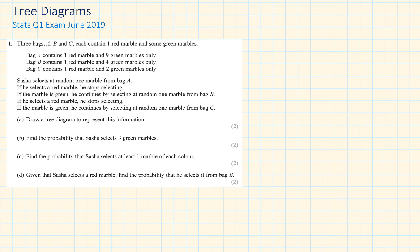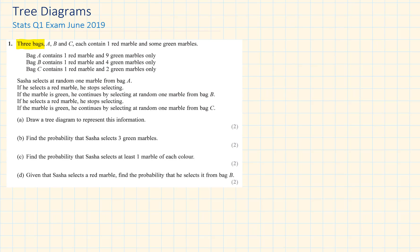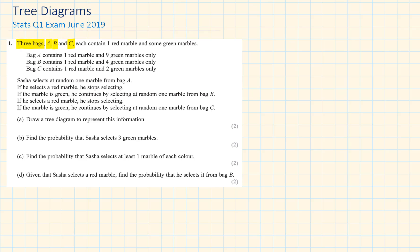Hi! This is a question on tree diagrams from the Edexcel June 2019 A Level Statistics exam. Three bags A, B and C each contain one red marble and some green marbles.